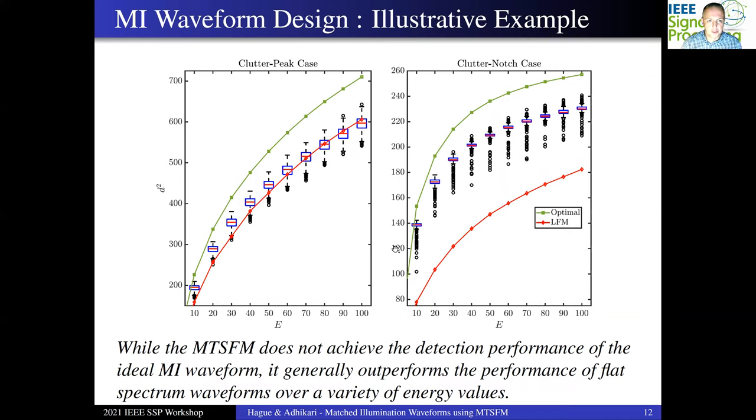Here I'm showing the results for the peak and clutter notch cases for a range of transmit energies. The green curves represent the detection metric for the MI waveform. The red curves represent the detection metric for that flat spectrum or LFM waveform. And then the box plots represent a series of trials composed of a thousand multi-tone SFM waveforms optimized using the method I just showed two slides ago for the same set of transmit energy values. The red line denotes the mean of the data, the box represents the second and third quartiles. The whiskers are spaced 1.5 times the interquartile range out. And those black circles represent statistical outliers.